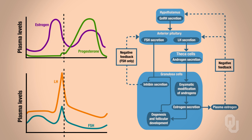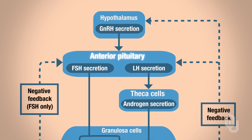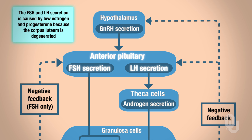Let's look at what's happening during the mid-follicular phase in terms of hormones. The hypothalamus synthesizes and secretes gonadotropin-releasing hormone, which targets the anterior pituitary to synthesize and secrete LH (luteinizing hormone) and FSH (follicle-stimulating hormone). This FSH and LH synthesis and secretion occurs because we have low estrogen levels and low progesterone levels at this time, since the corpus luteum is degenerated.